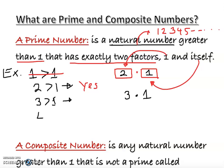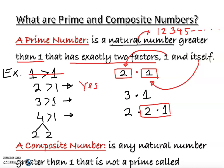Now let's look at number four. Four is greater than one, yes. But when we look at the factors, we have two times two times one. We can do a factor tree to break it down — that's like finding prime factorization. Since we get an extra factor beyond just one and itself, four is not a prime number.